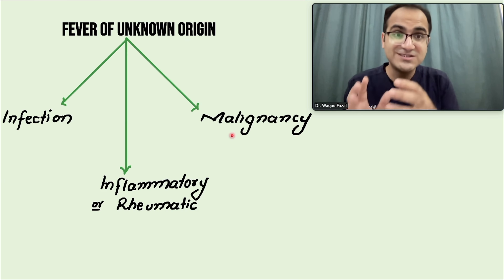After infections, inflammatory or autoimmune diseases are the next common cause — especially in young females presenting with a long history of fever greater than three weeks that is not resolving. Adult-onset Still's disease, SLE, and vasculitis such as Takayasu arteritis and Behçet's disease are common causes. An ANA test coming out positive points toward these inflammatory or rheumatic diseases as the cause.